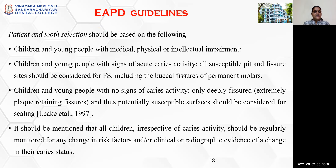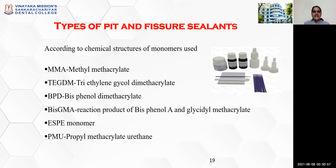The AAPD guidelines state that patient and tooth selection should be based on the following: children and young people with medical, physical, or intellectual impairment; children and young people with signs of acute caries activity — all susceptible pit and fissure sites should be considered for fissure sealants, including the buccal fissures of permanent molars. For children and young people with no signs of caries activity, only deeply fissured and thus potentially susceptible surfaces should be considered for sealing. All children irrespective of caries activity should be regularly monitored for any change in risk factors or clinical/radiographic evidence of change in caries status.